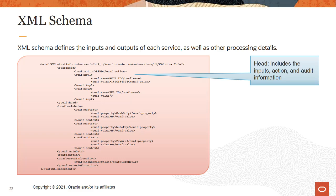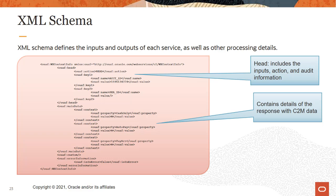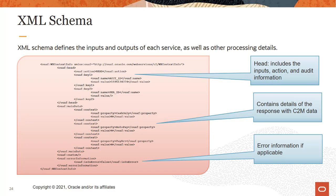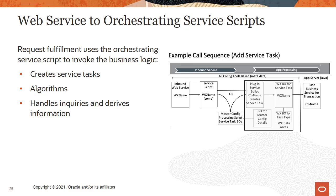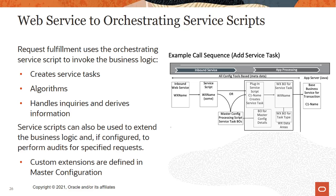In this example, we're showing the inputs, action, and audit information, the details of the XML response populated with C2M data, and error information if applicable. Request fulfillment uses the orchestrating service script to invoke the business logic. It creates service tasks and algorithms as well as handling inquiries and deriving information. Service scripts can also be used to extend the business logic, and if configured, to perform audits for specified requests.